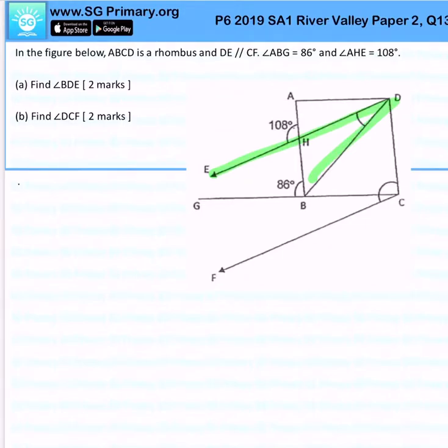So the very first step that I want to do is to find angle ABC. Angle ABC would be 180 degrees minus 86 degrees which will give me 94 degrees. This will be 94.